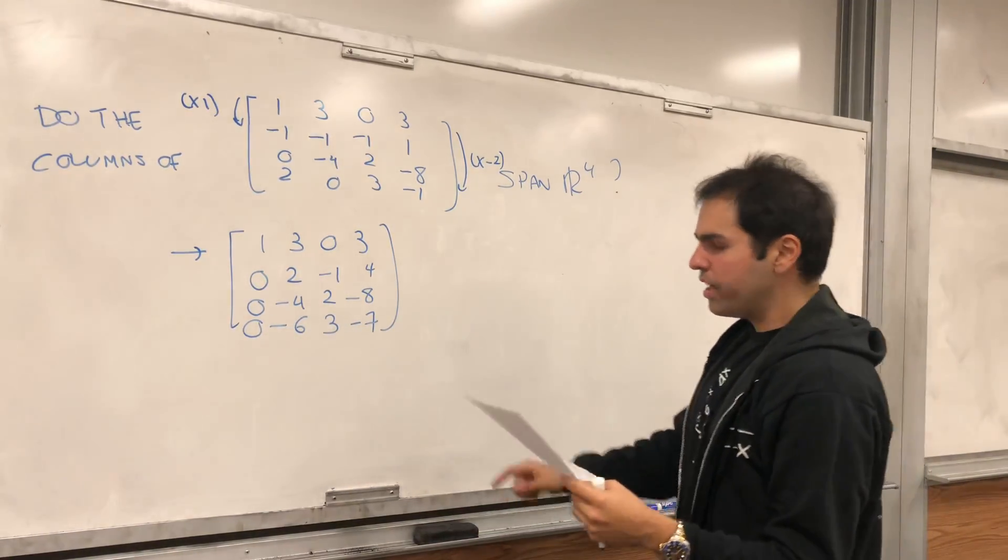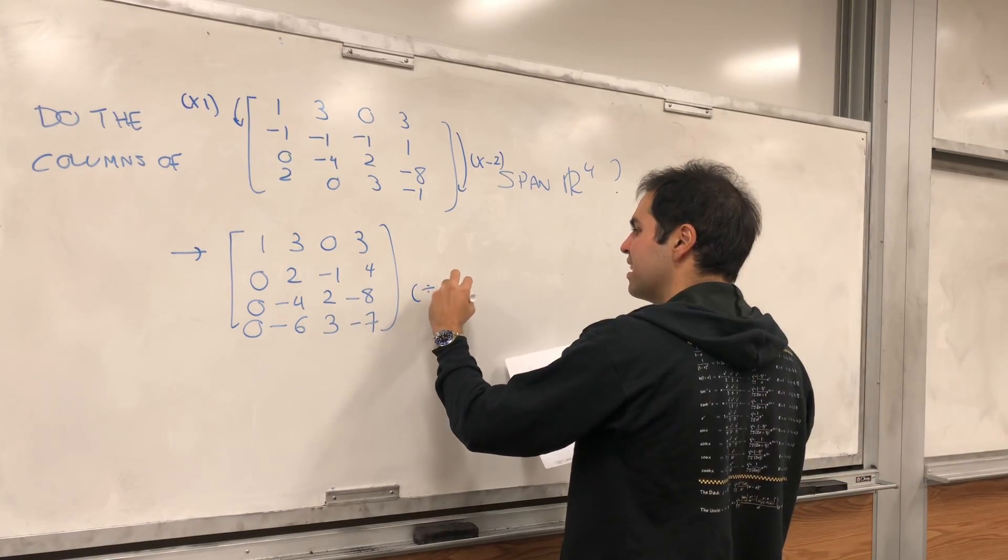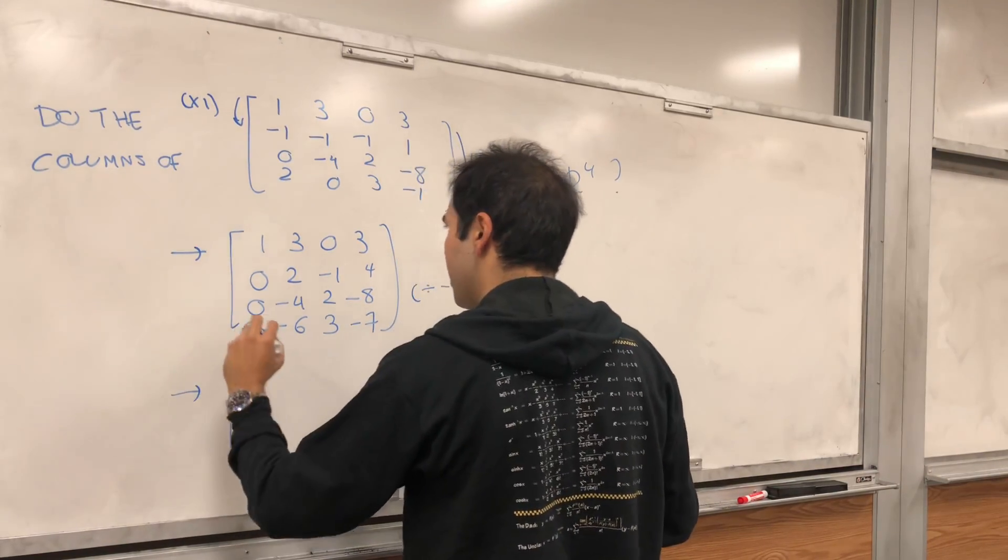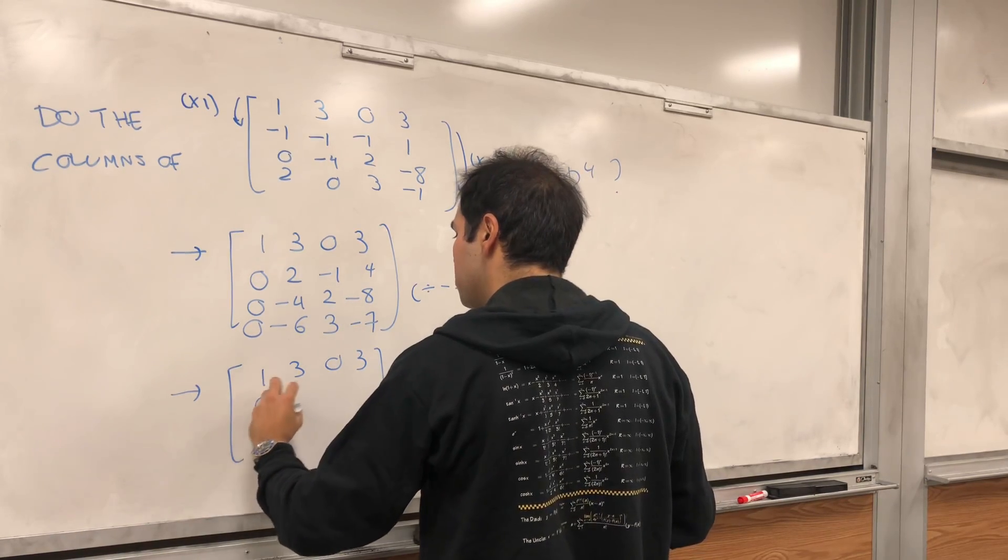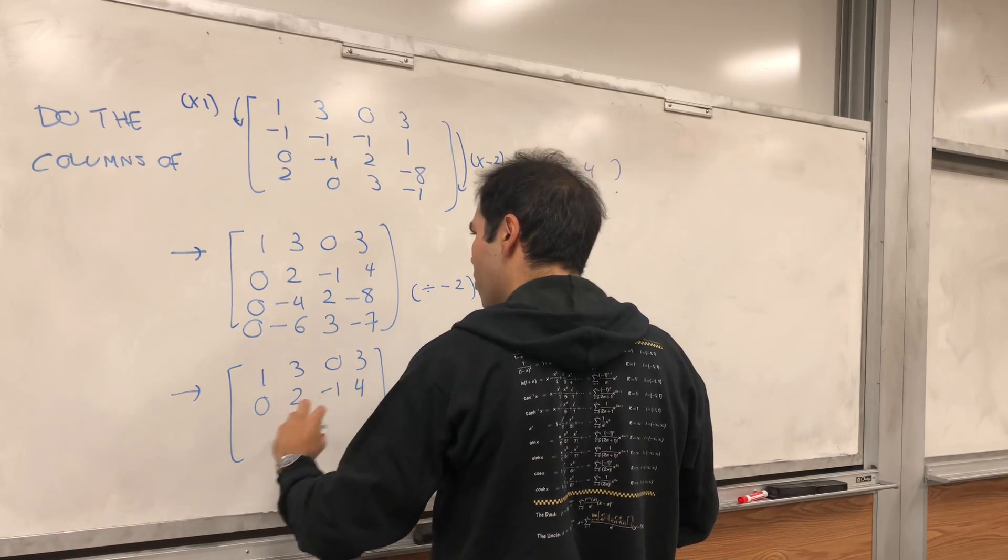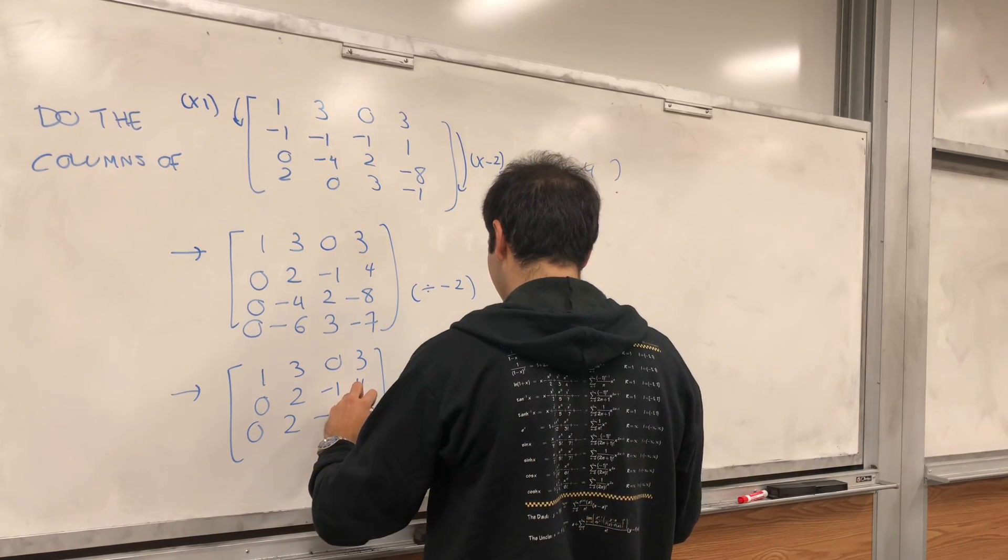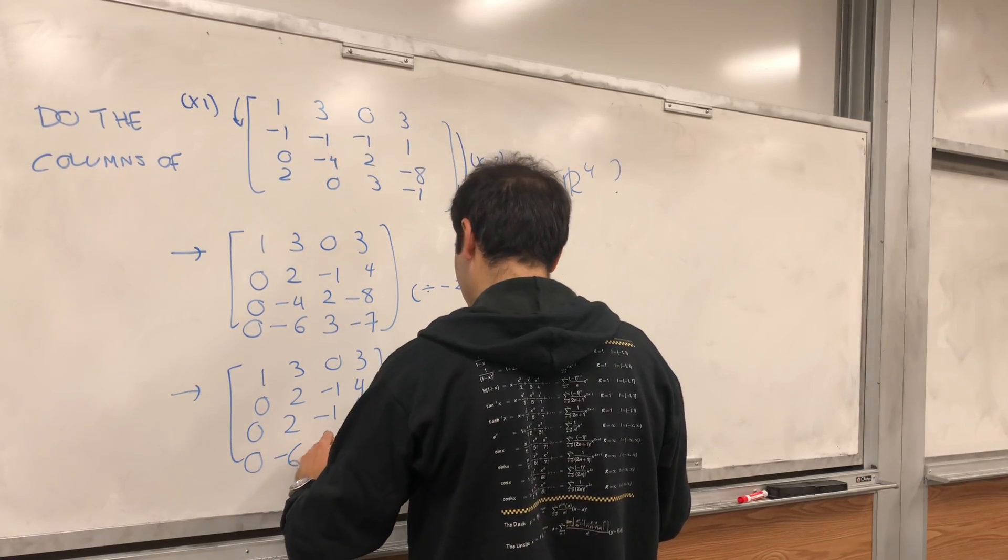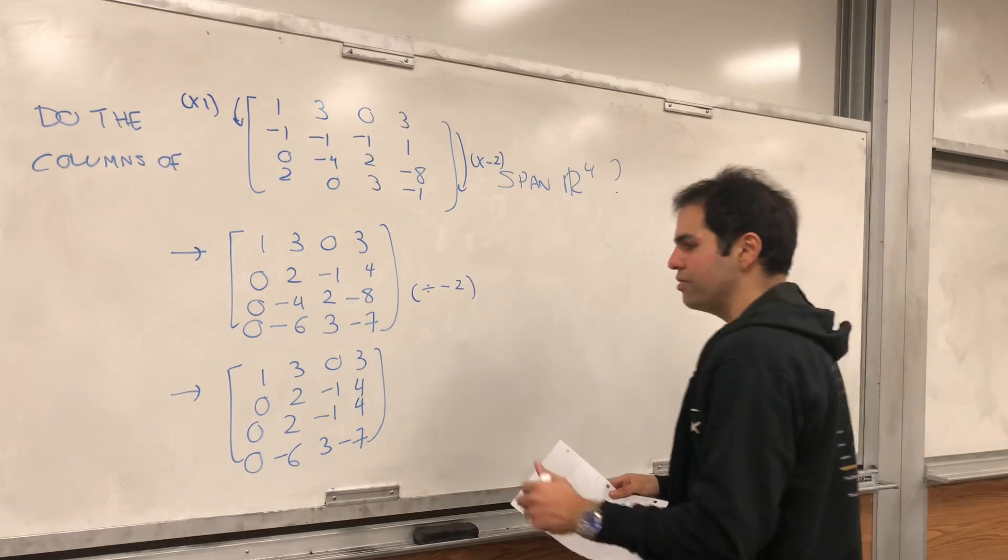Okay, good, and then we can continue, but notice this is nice simplification here. You can divide this row by minus two, and we get one, three, zero, three, and then zero, two, minus one, four, and then zero, two, interestingly, minus one, four, and then zero, minus six, three, minus seven.